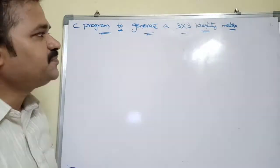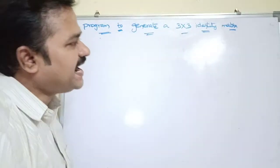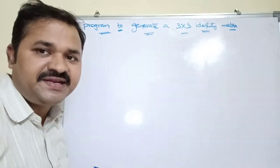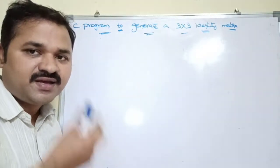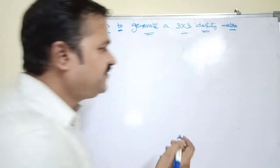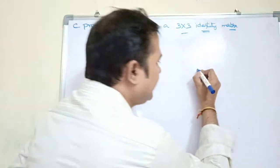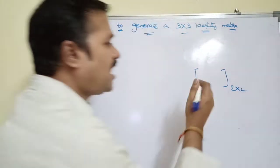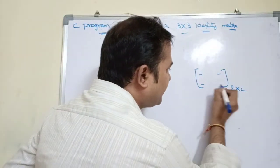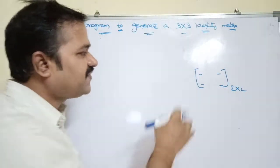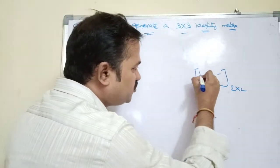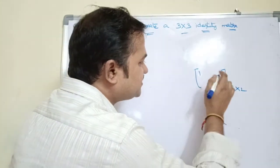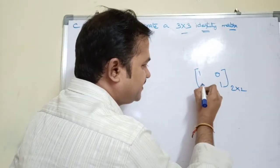Let's see a program to generate a 3 by 3 identity matrix. An identity matrix means the diagonal elements should be 1, whereas the remaining elements are 0. For example, in a 2 by 2 matrix, we have 2 rows where each row contains 2 elements. Here the diagonal elements are 1 and 1, whereas the remaining elements are 0.